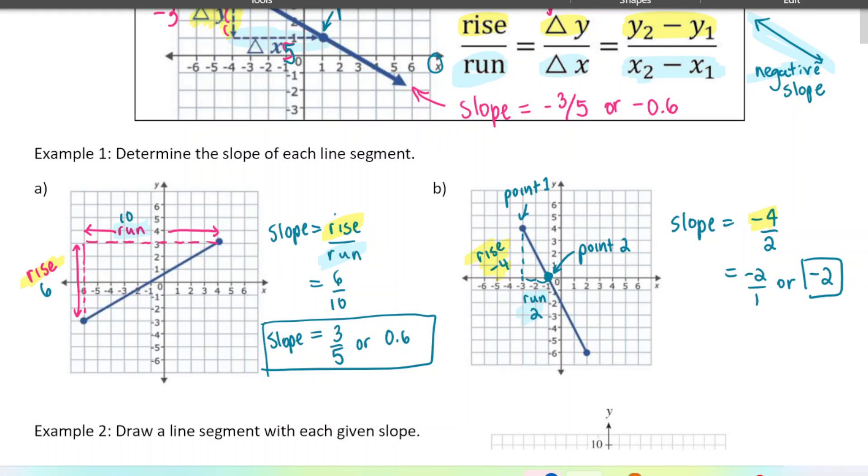It actually doesn't matter which two points you would have chose. I could have chosen these two points here, this point and this point. I would have counted 1, 2, 3, 4, 5, 6, negative 6, and 1, 2, 3. But negative 6 over 3 is the same as negative 2. I still get the same slope. It doesn't matter which point I choose, or which two points I choose, you get the same slope no matter what.